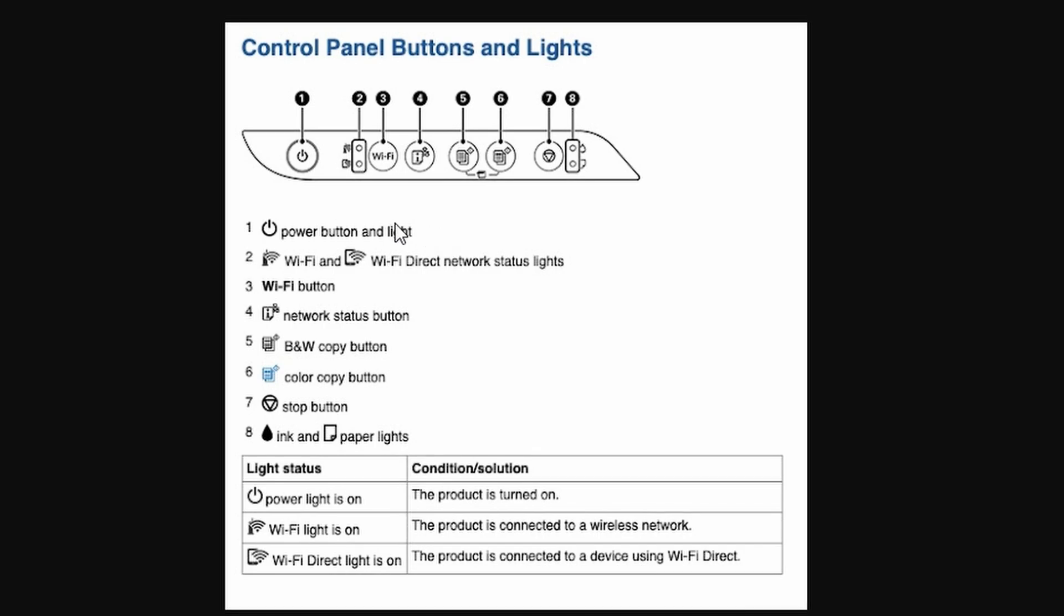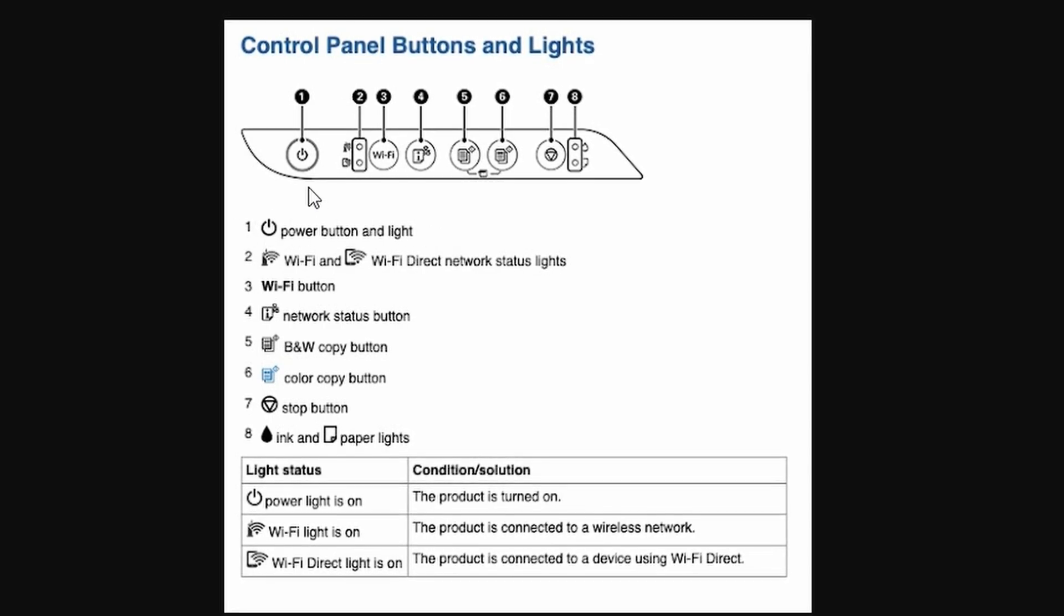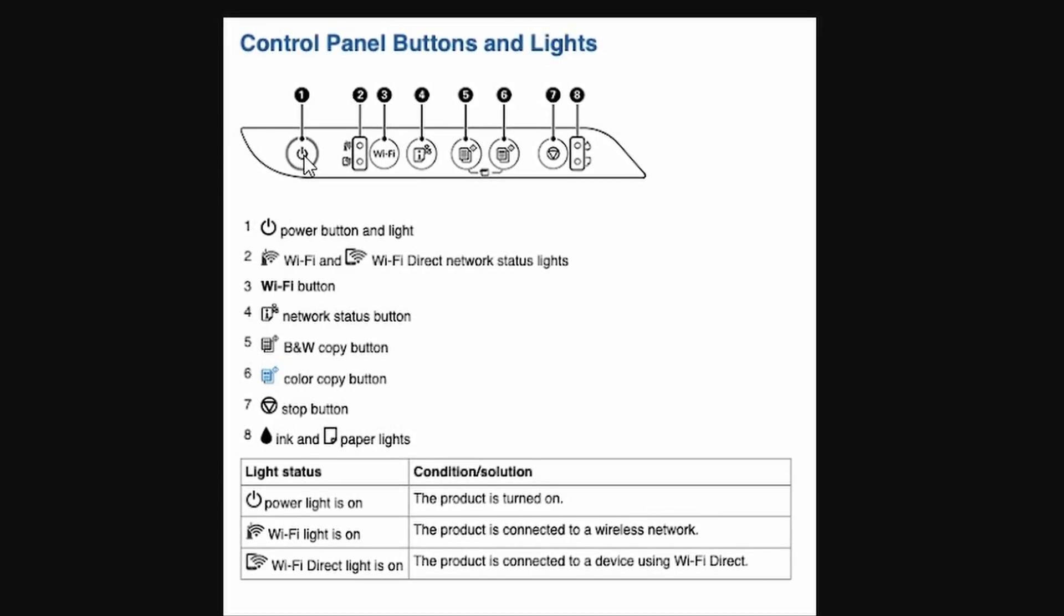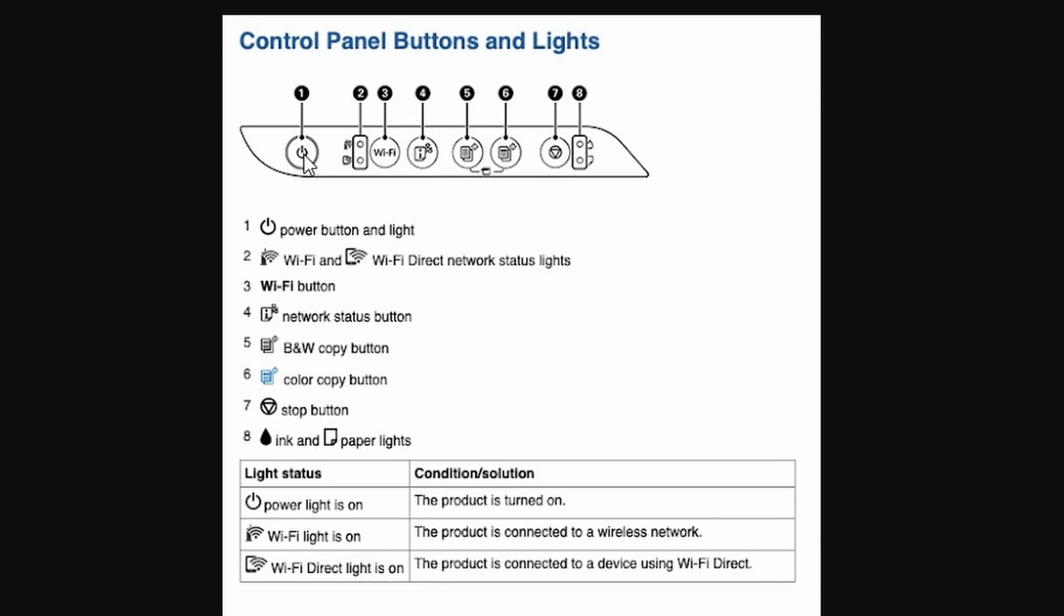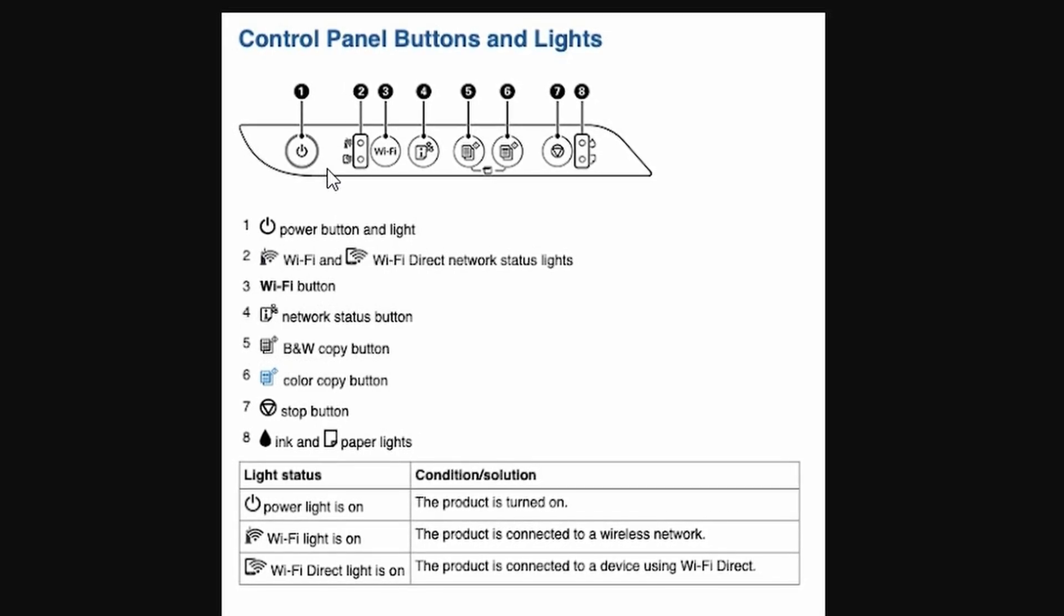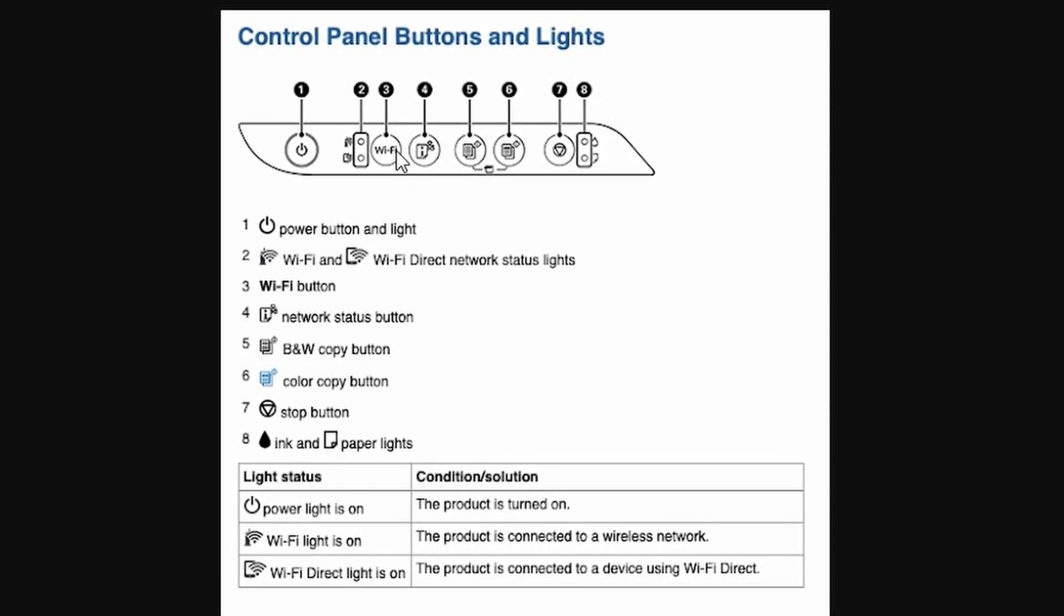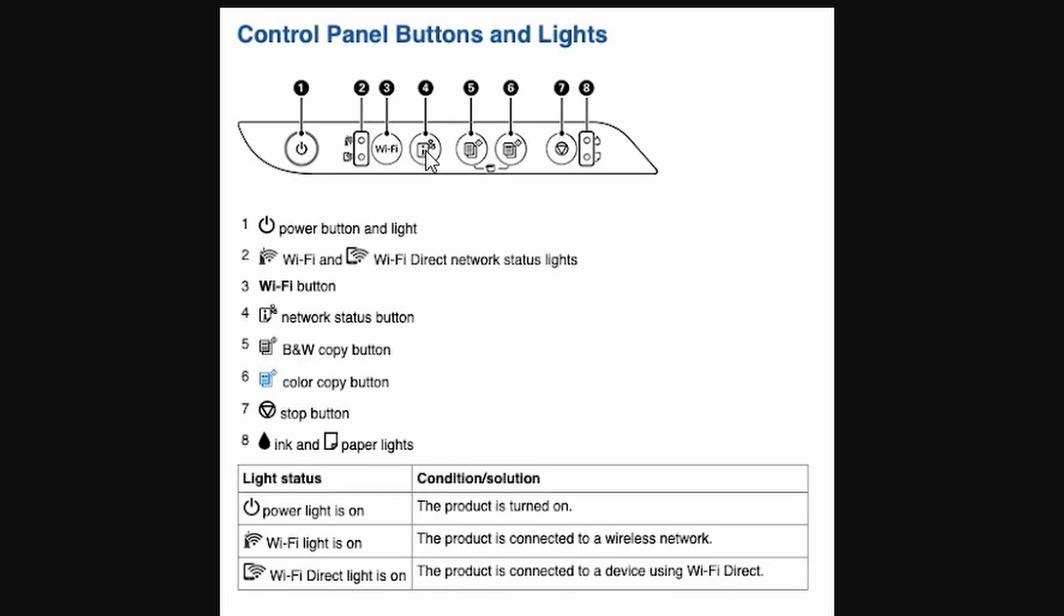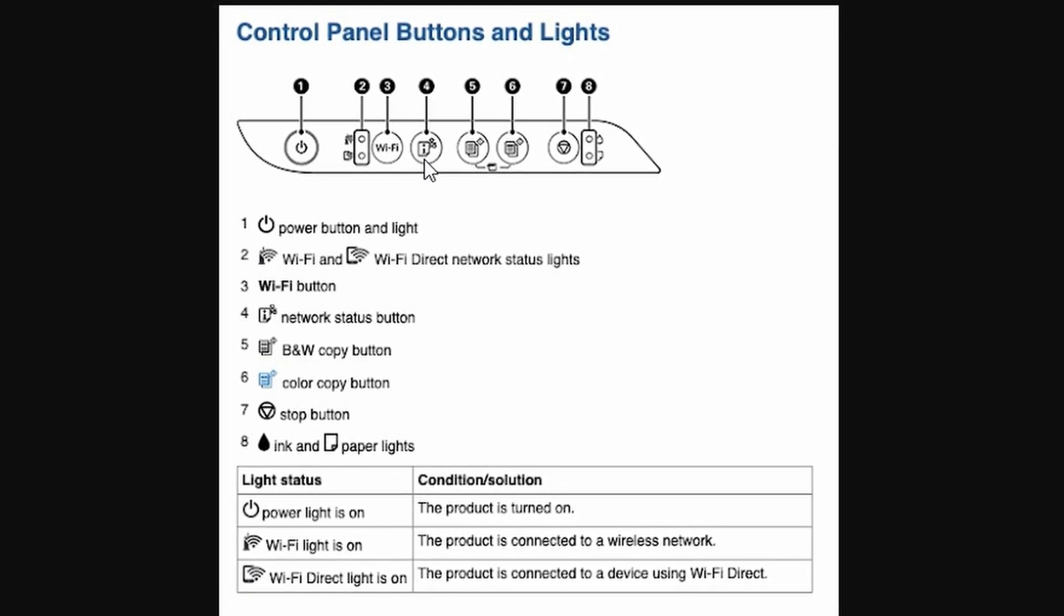Start by turning the printer off completely. Once it's powered off, you'll want to press and hold two buttons: the Wi-Fi network status button, it's next to the Wi-Fi symbol, and the power button. Press and hold both buttons for a few seconds.